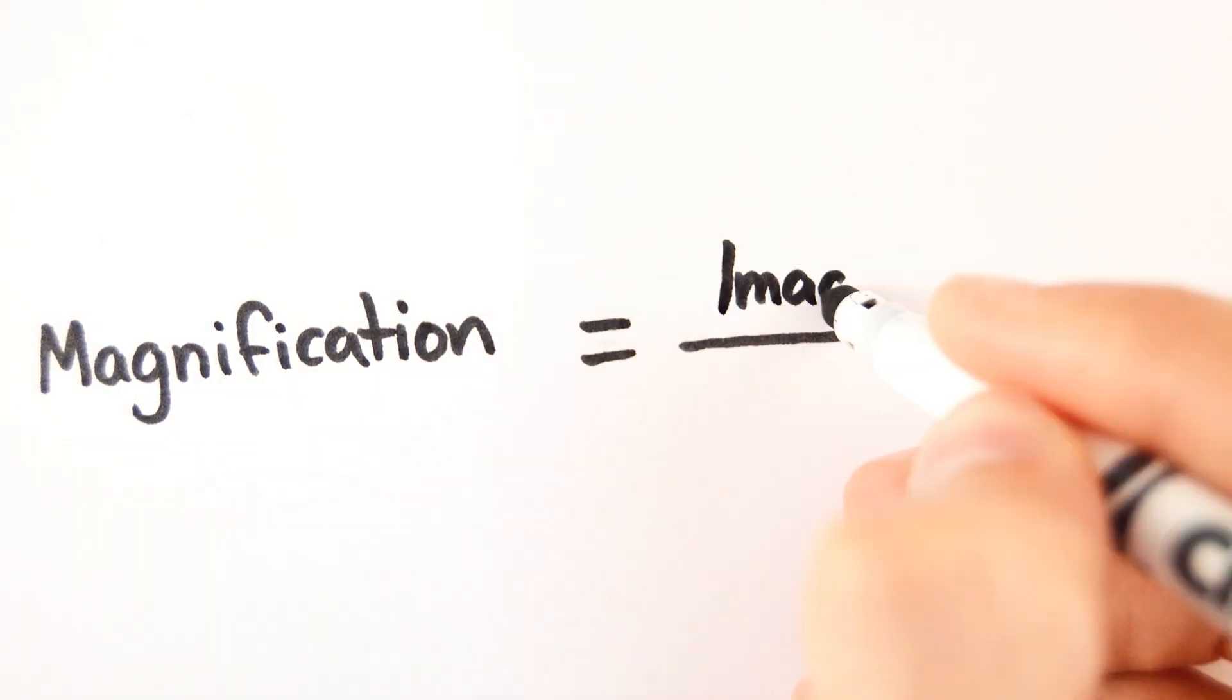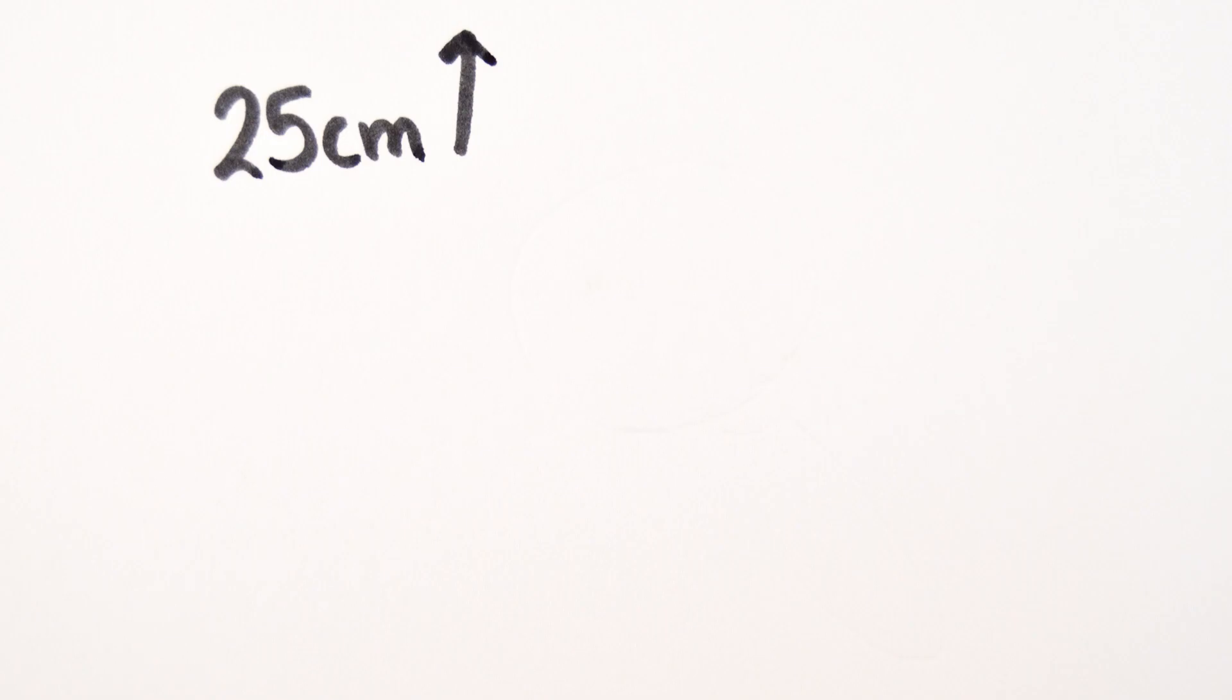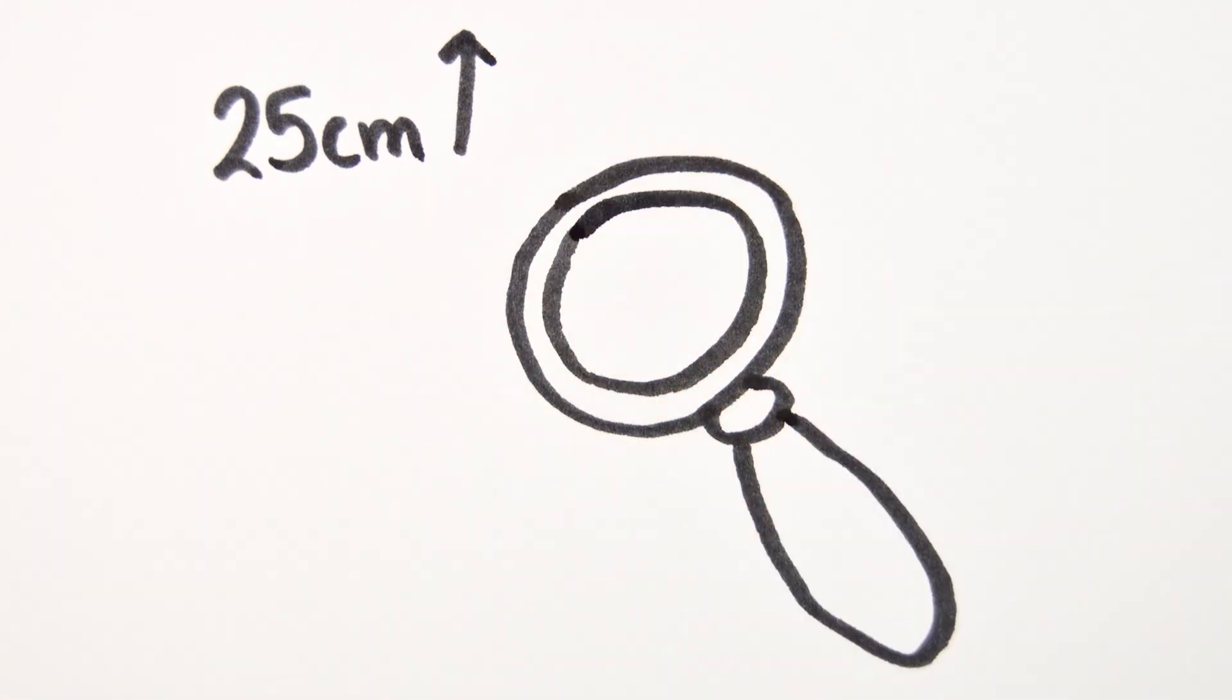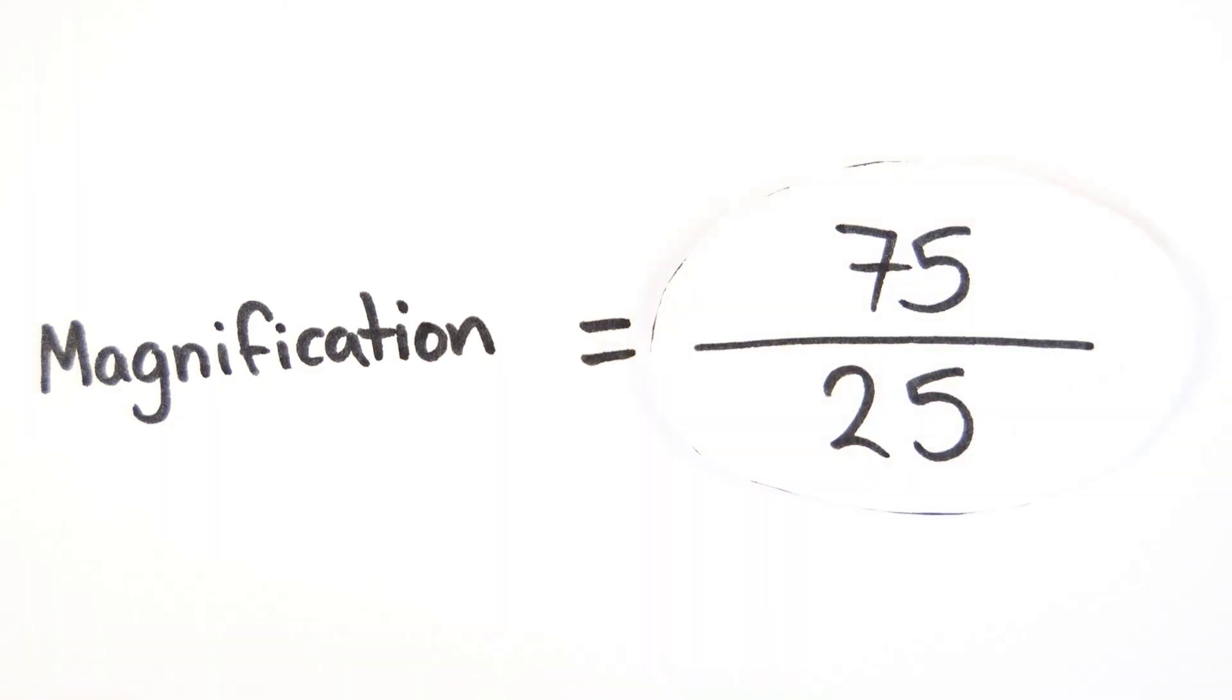You can work out the factor of magnification by dividing the image height by the object height. For example, the image here appears to be 75cm high when viewed through the magnifying glass, but the object is only 25cm. This means the magnification is three times bigger than the original object.